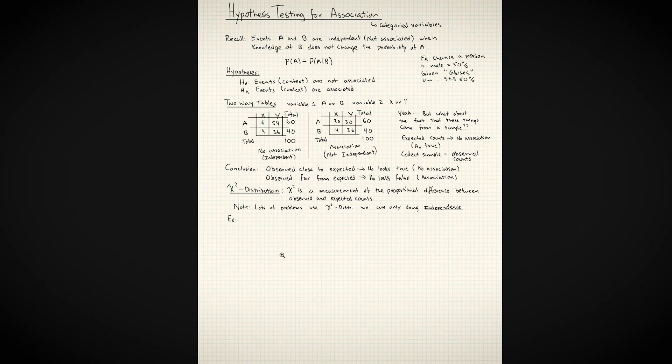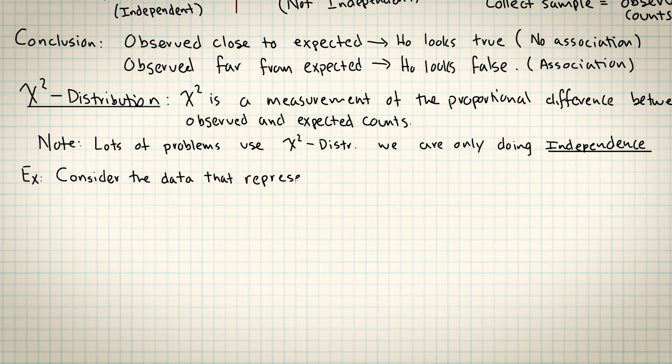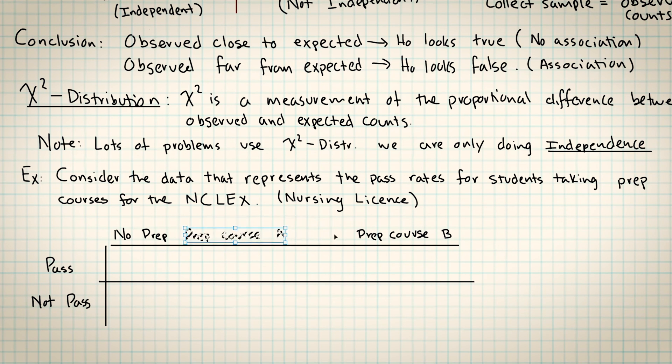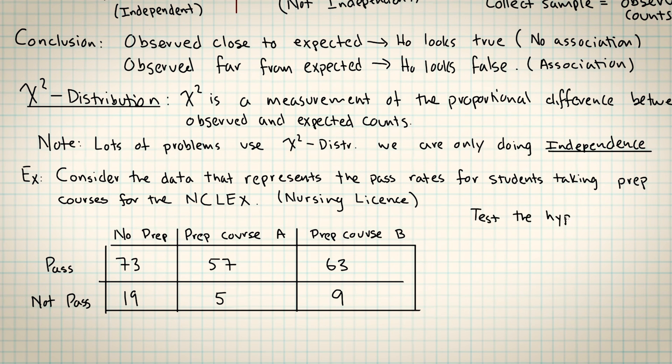I thought of an example here about students that are taking a prep class so that they can take a test to try to get their nursing license. There's going to be two categories, the students that passed and the students that didn't pass. The variable is which kind of prep course they took. They either had no prep course, so just their usual academic studies, or students took a prep course from company A or company B. We're going to test the hypothesis that there is an association between taking a prep course and passing the exam. We'll use a five percent level of significance.